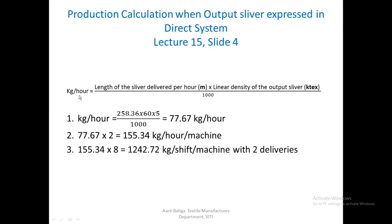For production in kg per hour, we take length of delivered sliver in meters per hour multiplied by linear density in kilotex divided by 1000. The front roller speed was in meters per minute, so multiply by 60 to get meters per hour. Substituting linear density of 5 kilotex and dividing by 1000 gives 77.67 kg per hour. Multiplying by 2 heads gives 155.34 kg per hour per machine. For kg per shift per machine with two deliveries, multiply that figure by 8 hours.